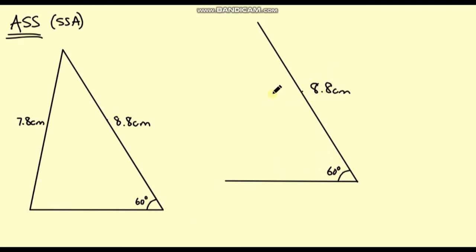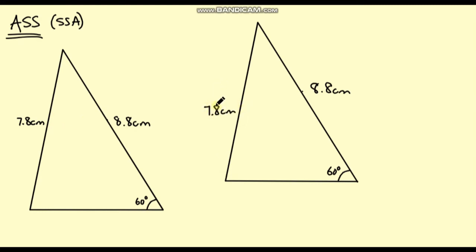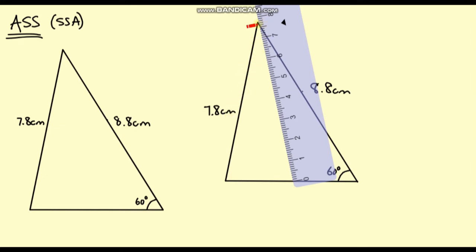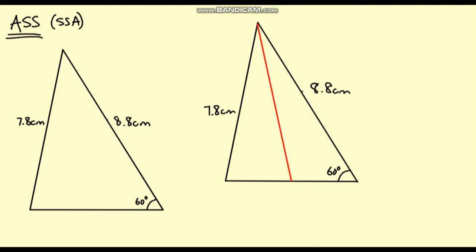Now I've got my angle and side lengths. My last side length that I need to draw in — can I draw one that is also 7.8 centimetres but does not go in this direction? And the answer is yes. If I connect these two points, we should have a 7.8 centimetre line. But there is also another line I could draw that would also be 7.8 centimetres — instead of going to the left, I can go to the right. So this length here is also 7.8 centimetres. We've actually constructed a different triangle.